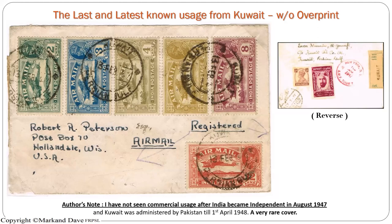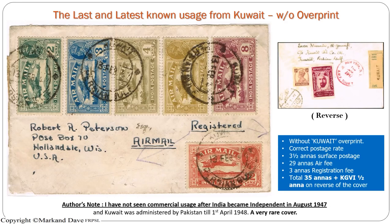This is the last and latest known usage to me, from Kuwait — interestingly without the Kuwait overprint. It gives the impression of being a philatelic cover, but it is not, because it has the correct postage rate: three and a half annas for surface, 29 annas for the air fee, 3 annas for registration, total 35 annas, plus the King's fee, which you can see on the reverse of the cover along with the six label. As mentioned earlier, the Kuwait post office was administered by the Bombay GPO until partition, when India became independent in August 1947, after which it was administered by Pakistan.